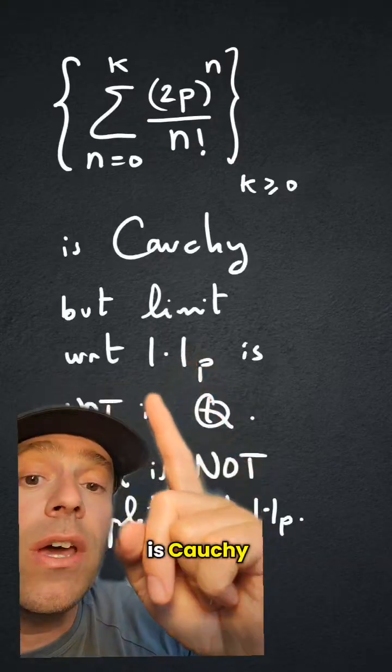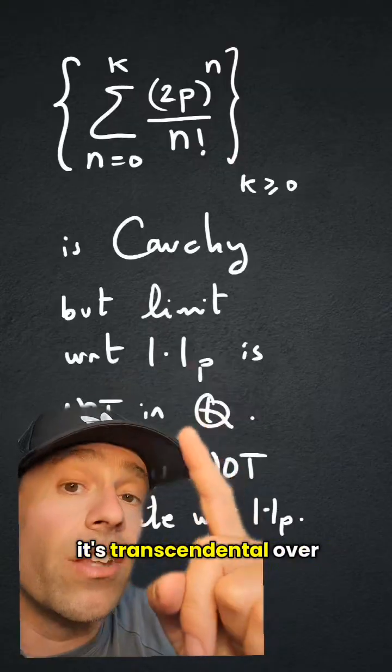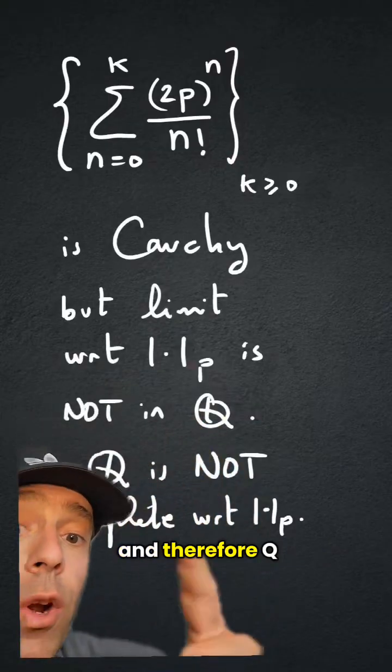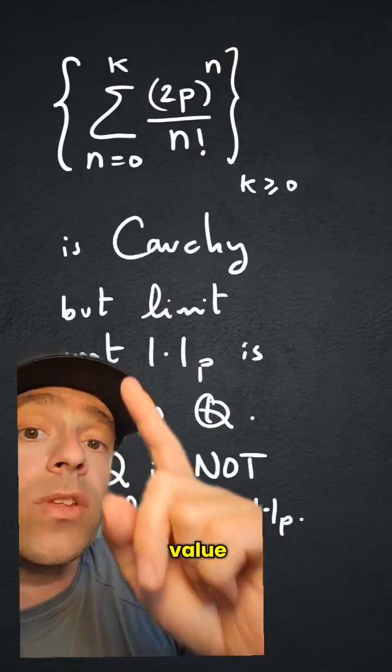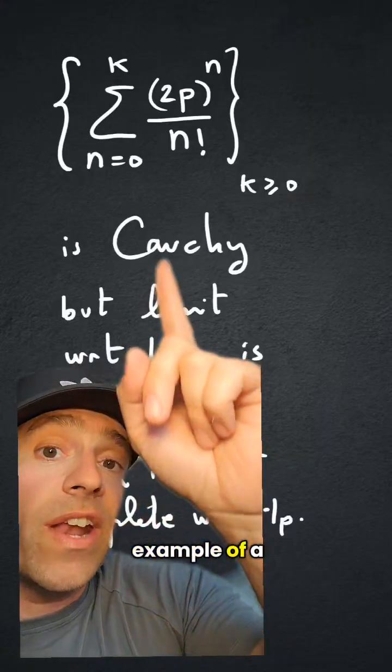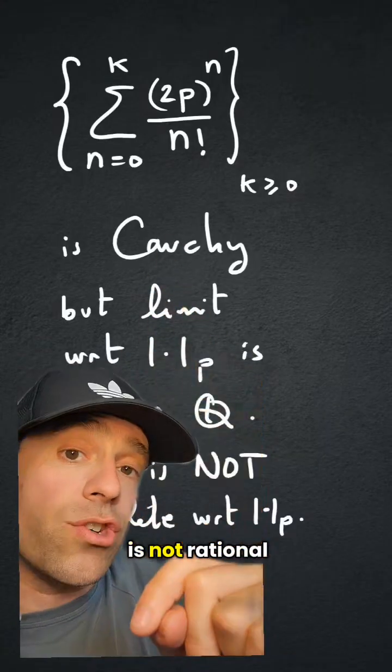That sequence is Cauchy, and the limit is not a rational number because it's transcendental over Q, and therefore Q is not complete with respect to the p-adic absolute value. So that's one example of a number that is always in Q_p, but it is not rational.